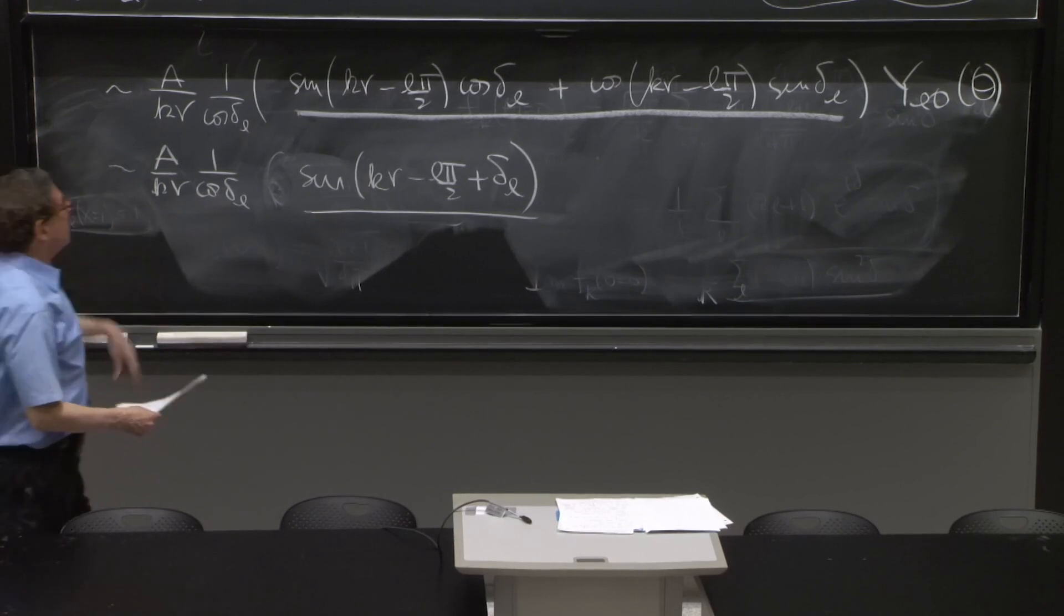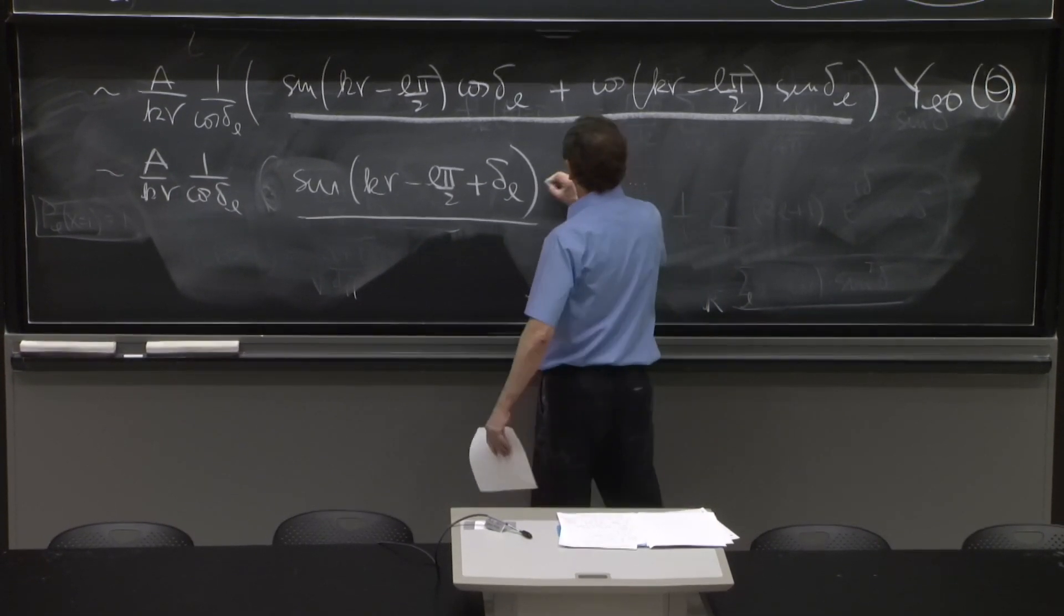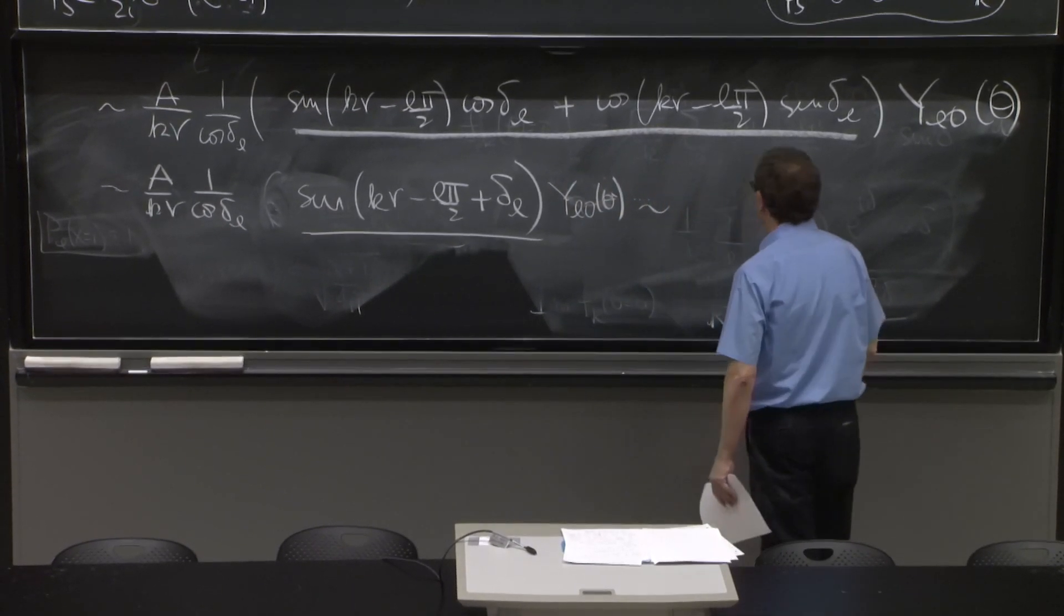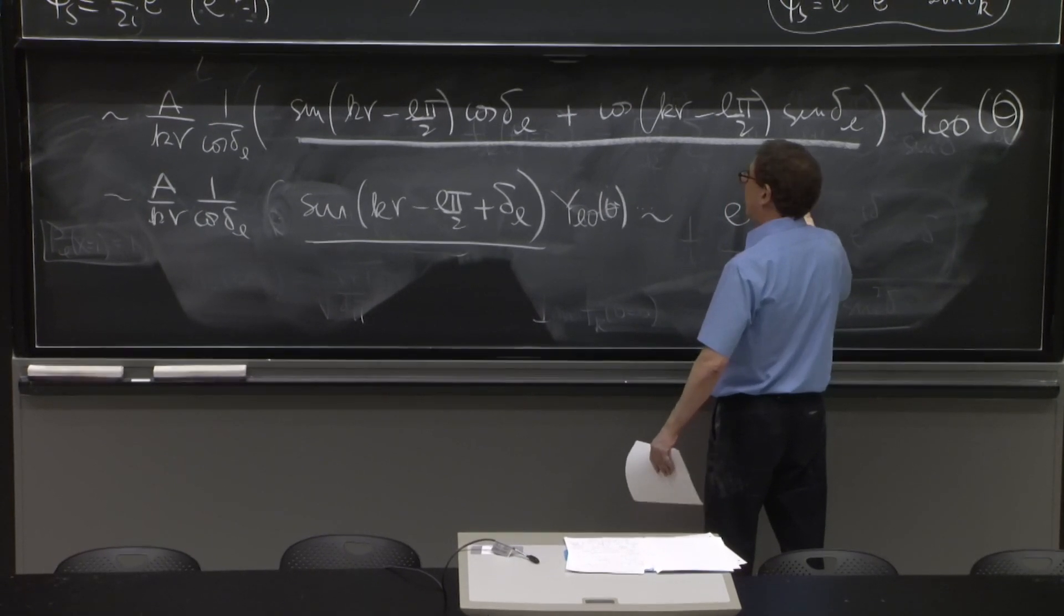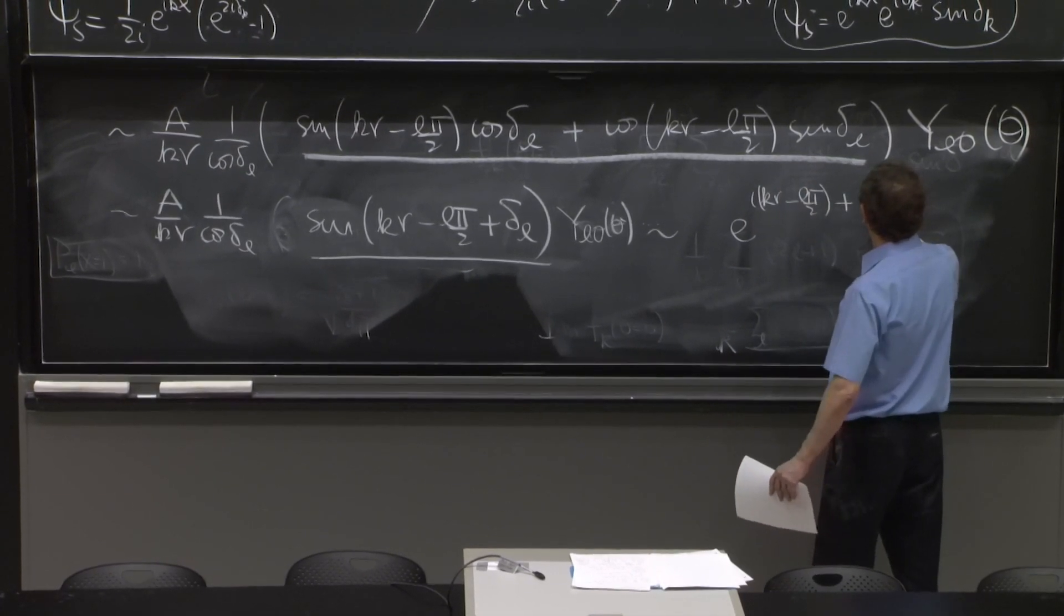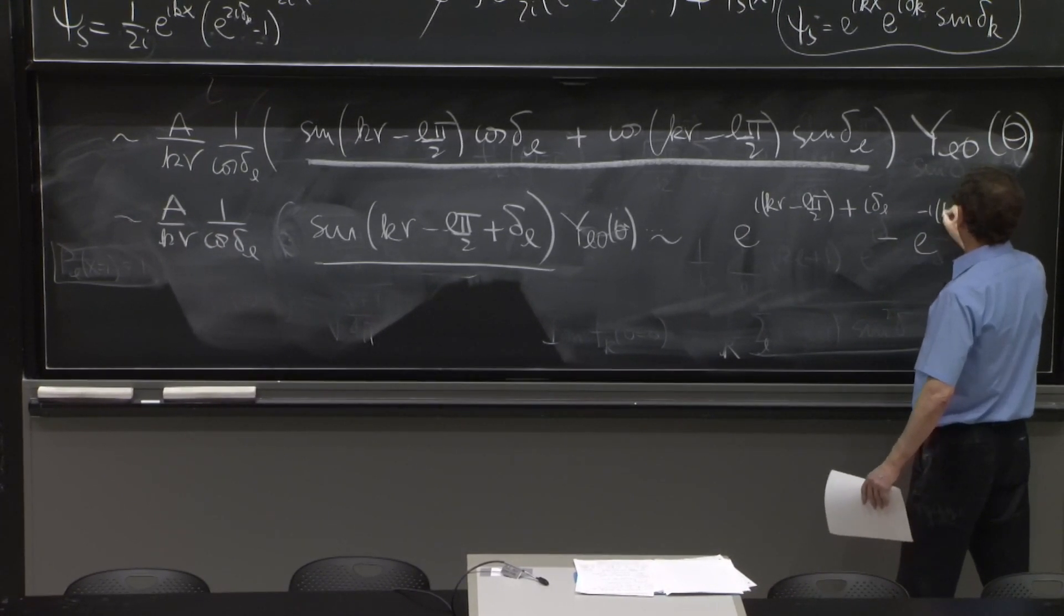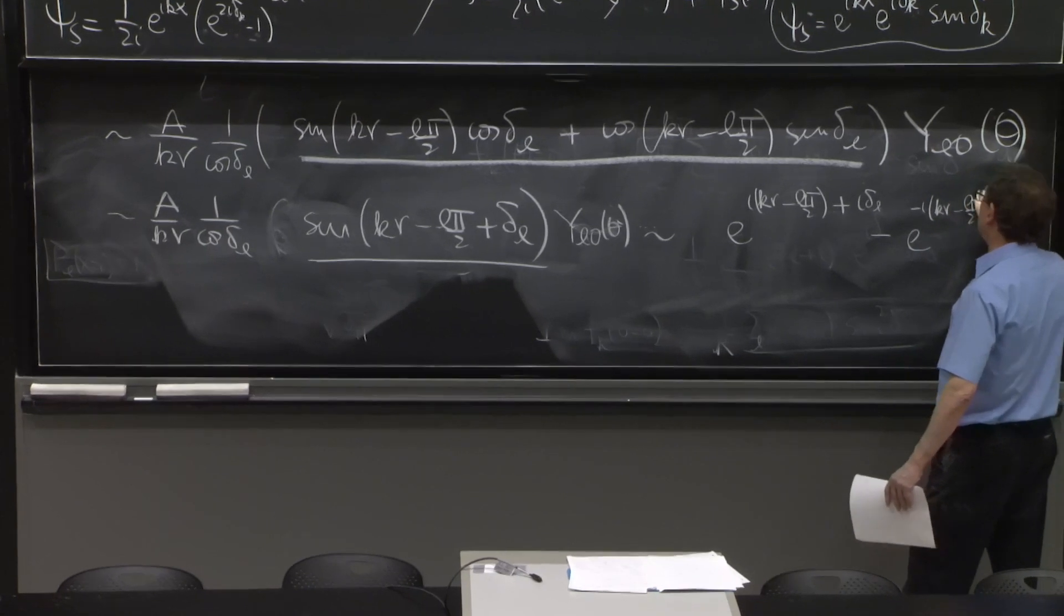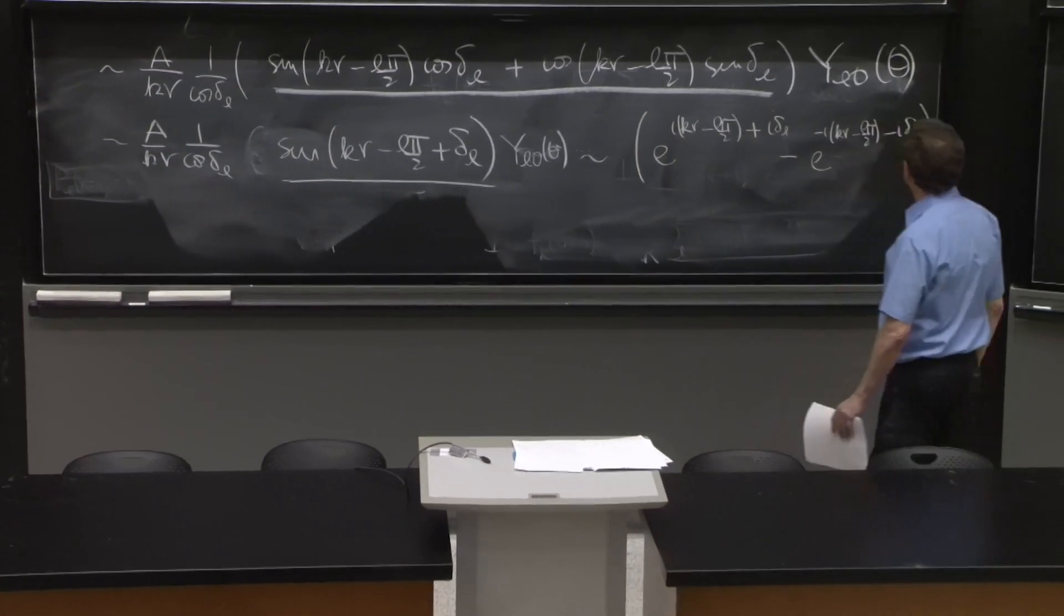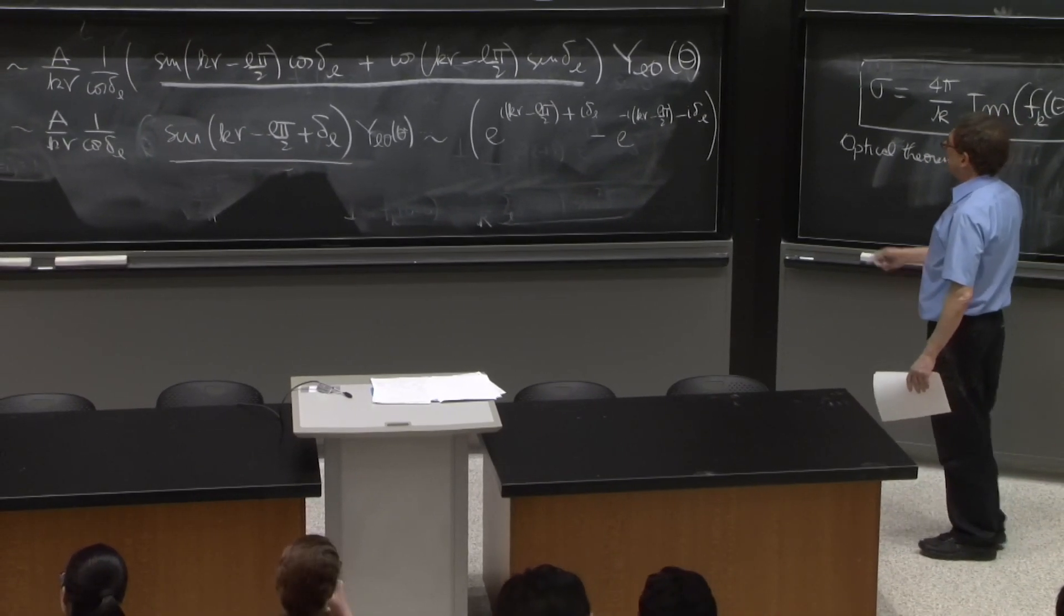But I want to show that's the same phase shift we had before. And that's clear already. So up to constants, this is YL0 of theta. And up to constants, this is e to the i kr minus L pi over 2 plus i delta L minus e to the minus i kr minus L pi over 2 minus i delta L.